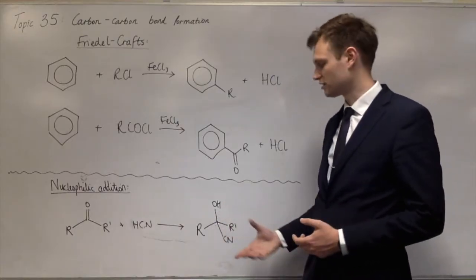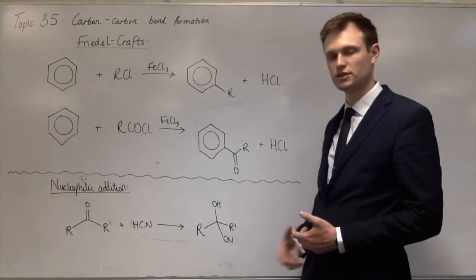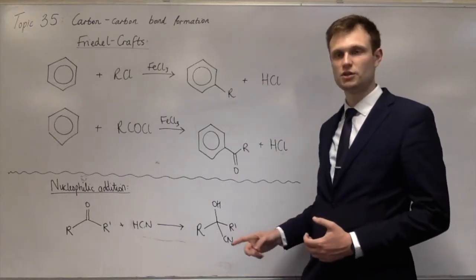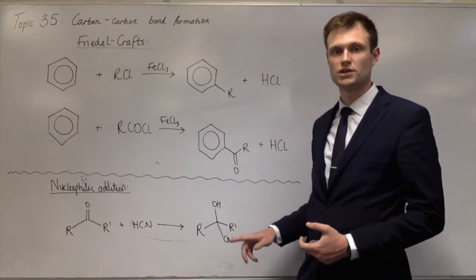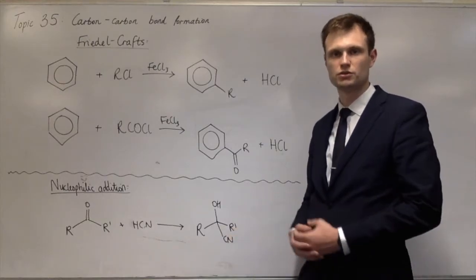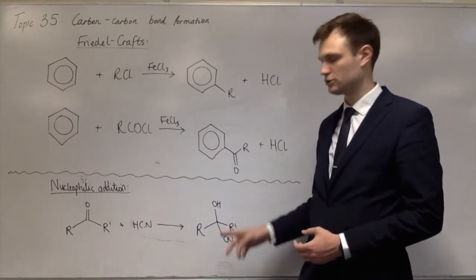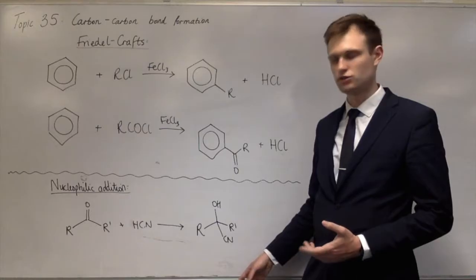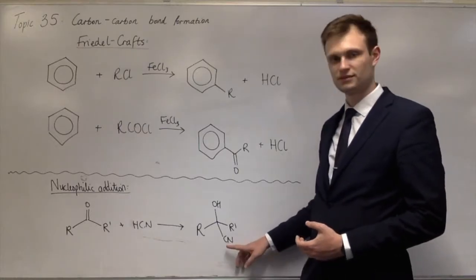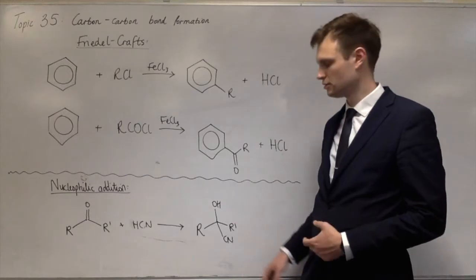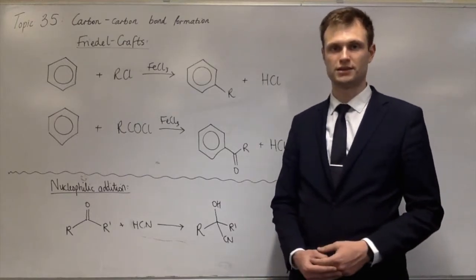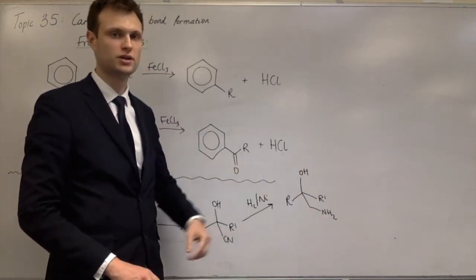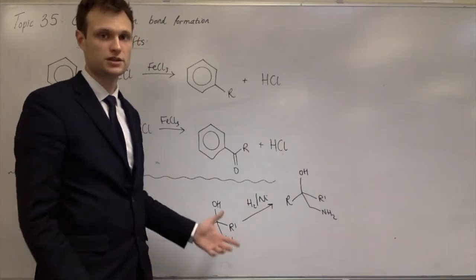Previously I mentioned that the specification didn't cover what you could do with the hydroxynitrile — it turns out that comes up later in the spec, and this is where it appears. There are two things you need to know: you can convert the nitrile into an amine group, or into a carboxylic acid group. To turn it into an amine, you reduce it by adding two lots of H₂ — one to the carbon, one to the nitrogen — giving CH₂ and NH₂. You do that by adding hydrogen gas with a nickel catalyst; in practice you just use excess hydrogen.